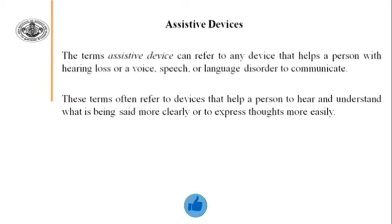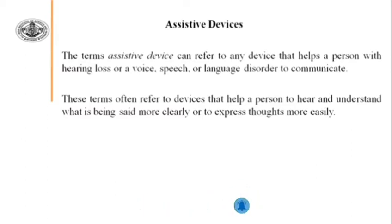As you are seeing, the topic name is Assistive Devices. Assistive Devices means the device which will help — that is the Assistive Device. The term Assistive Devices can refer to any device that helps a person with hearing loss or a voice, speech, or language disorder to communicate. Devices which help in communication between a person with hearing or speech impairment and others are known as Assistive Devices.